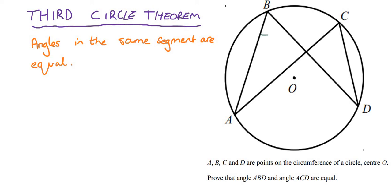So ABD is this angle here, and ACD is this one. We're trying to prove that these angles are equal. Now, what it means by angles in the same segment is if we draw a chord from A to D,